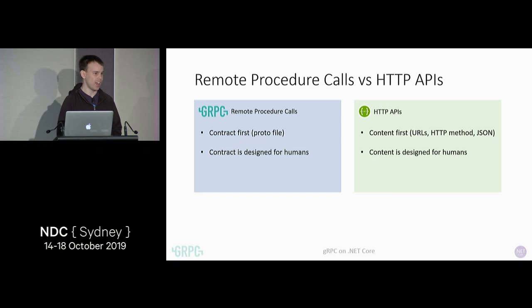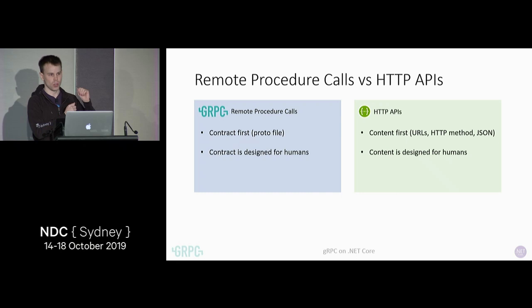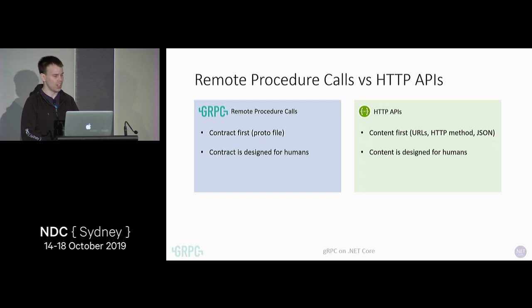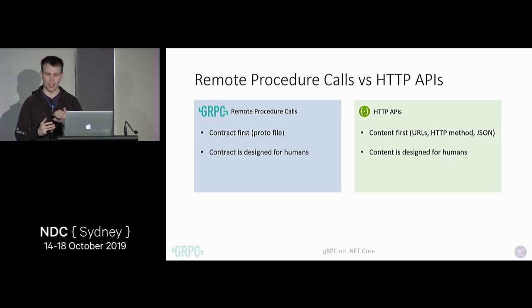With gRPC, that contract is designed for humans. It's very easy to read and understand — you can type it out yourself, modify it, and give it to someone else. If we compare that with HTTP APIs, the content is designed for humans. You're able to look at a REST call and see that URL is for product number five, and here's the JSON: first name John, last name Smith, here is his age. With gRPC, the opposite is true — you can't read the message. Also with HTTP APIs, if you're using a contract-like technology like Swagger or OpenAPI, those contracts are not very user-friendly and you'd probably want a tool to generate them.